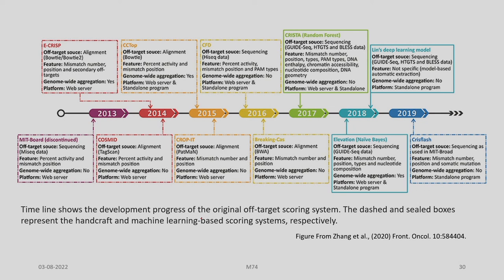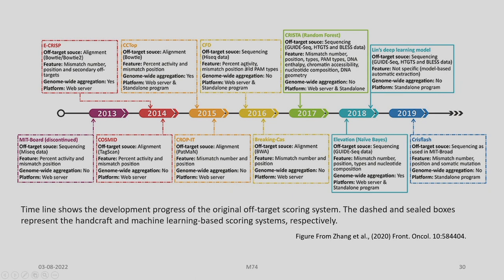In 2013, the MIT board — now discontinued — used sequencing MySEC data with features of percent activity and mismatch position, without genome-wide aggregation, and is available as a web server. CCTOP is available only as a standalone program. CFD and Elevation are available both as a web server and standalone program. A-CRISPR is only available as a standalone program, as is Lin's deep learning model, while Crystal Random Forest is available both as web server and standalone.